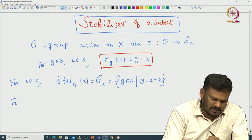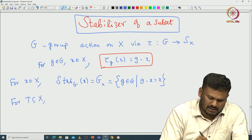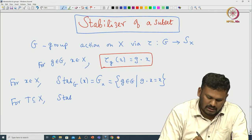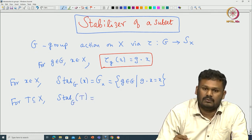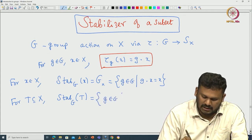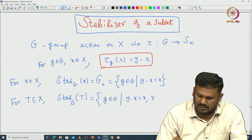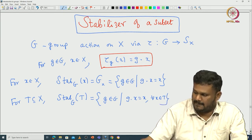In general, we can define the stabilizer for any subset of capital X. The stabilizer of capital T with respect to the group action G is those elements of G that fix all elements of capital T pointwise. That is called the stabilizer of capital T.